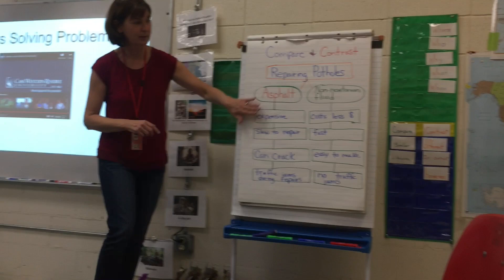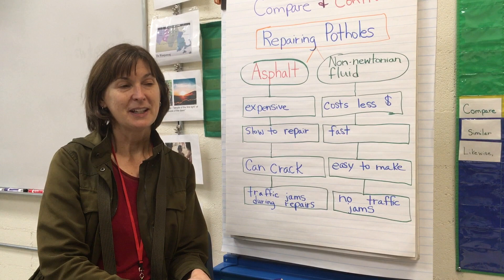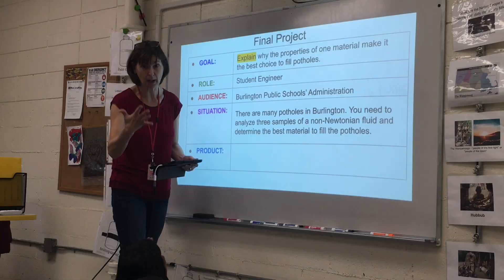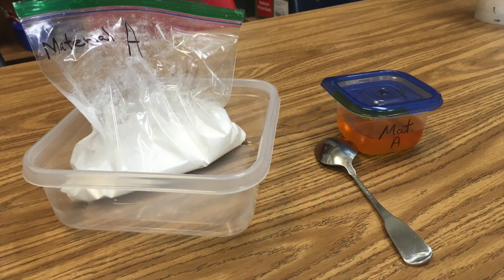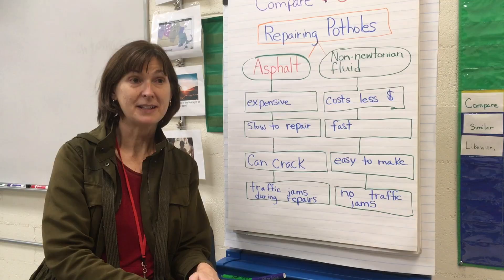After that, the kids were familiar with potholes and knew two different ways to repair them. We went into the challenge with the idea that we needed to determine the best non-Newtonian fluid formulation to repair potholes. We created three non-Newtonian fluids using pre-measured cornstarch and water, making three different solutions which we put in sandwich bags.